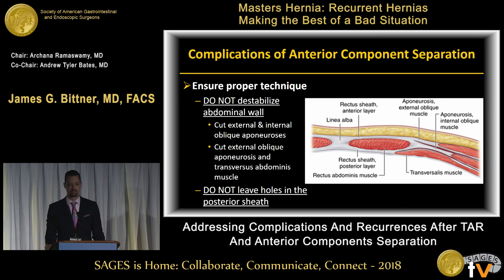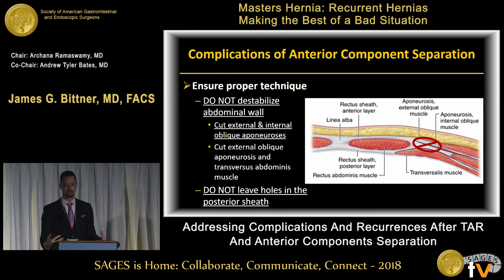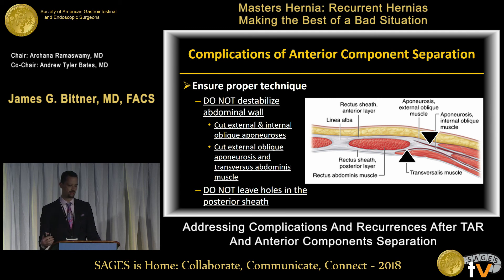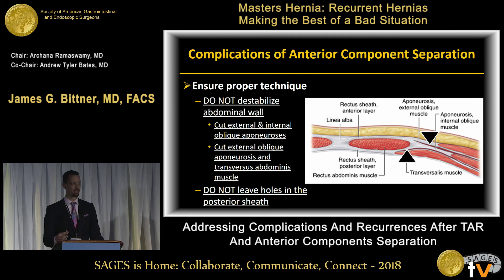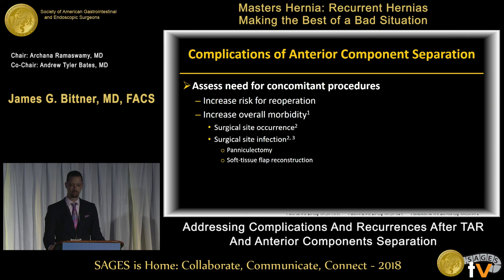You don't want to destabilize the abdominal wall. Cutting the external oblique and the internal oblique simultaneously is not ideal — it basically results in only the transversalis holding everything together, which is not sufficiently strong. Another technical error is cutting both the external oblique aponeurosis and the transversus abdominis muscles. I've been called into cases where an anterior component separation was performed without adequate medialization, and the surgeon then cut the transversus abdominis muscle from the intraperitoneal surface — obviously something you want to avoid.